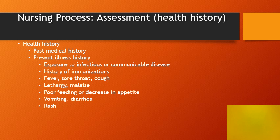Family history might include lack of immunizations or recent infection or communicable disease. When looking at the present illness history, ask whether they've been exposed to any infectious or communicable diseases, history of immunization, fever, sore throat, cough, lethargy, poor feeding, decreased appetite, vomiting, diarrhea, and rash. Many children with infections have a rash involved, and rashes can be very difficult to identify, so a thorough history and description will help determine the source.